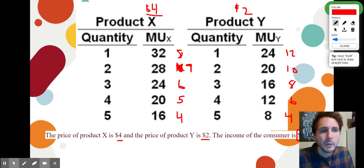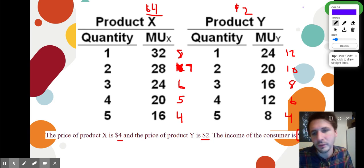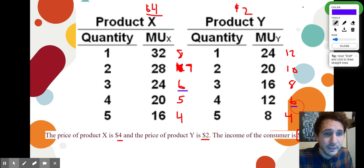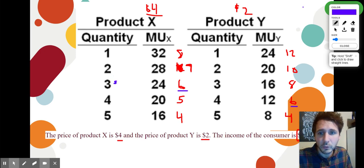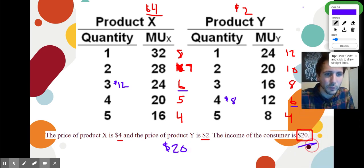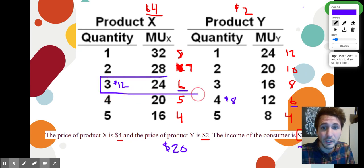Instead of going through every choice one by one, I find the matchy-matchy. I spot a match at 6 and 6 — three units of X and four units of Y. Can I afford it? Three of product X: 3×$4=$12. Four of product Y: 4×$2=$8. Total: $12+$8=$20. I have exactly $20, so I'm out of money. That is my ideal combination: three units of product X and four units of product Y.